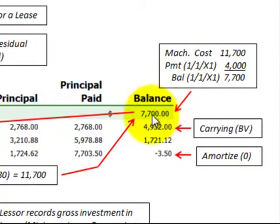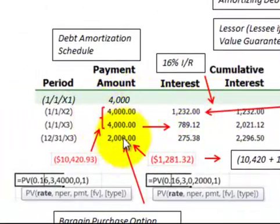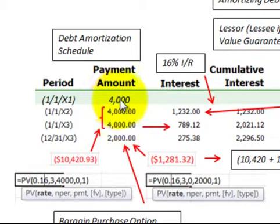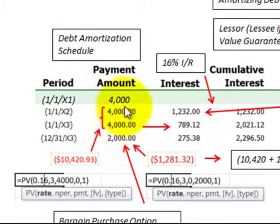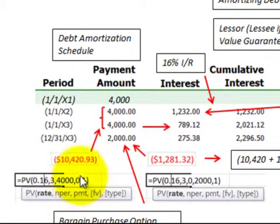Let's look at how we'd relate the $7,700 back to our payments. We're going to make $4,000 payments at the beginning of each year, years X1 through X3. We have to discount these $4,000 payment amounts back to what they'd be worth at the beginning of the lease. In this case, we had 16% interest — that's the lease-implied interest rate. With three periods and payments at the beginning of the lease, discounting them back, they're worth $10,420.